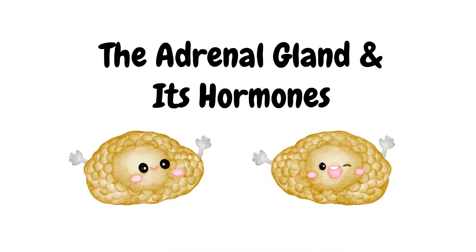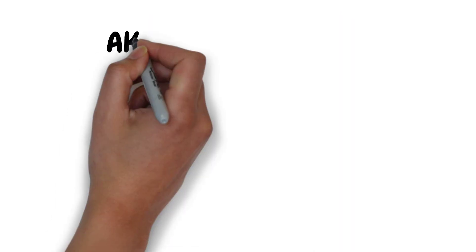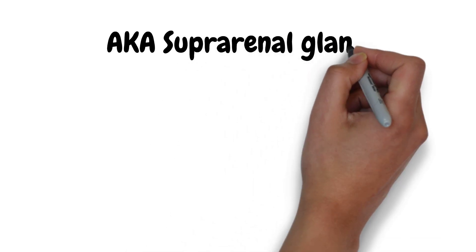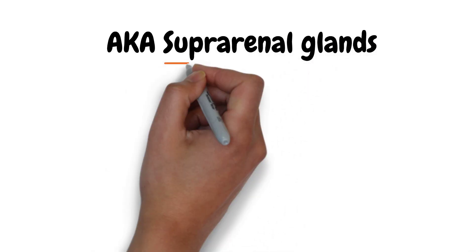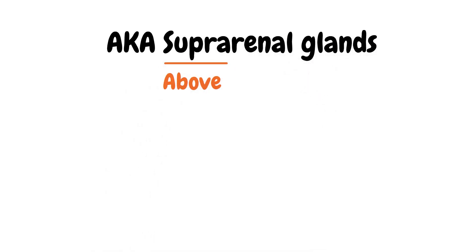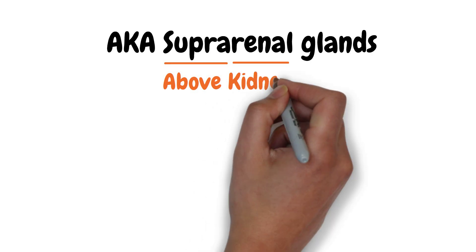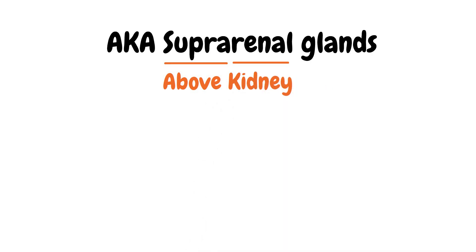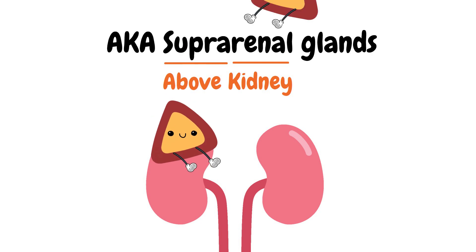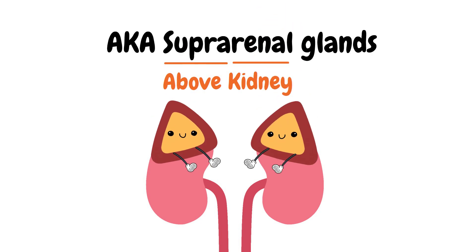The adrenal glands are also known as suprarenal glands. Supra means above, renal is kidney. The adrenal glands are small, triangular-shaped glands that sit on top of your kidneys.